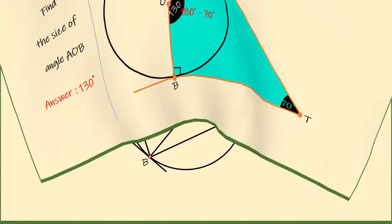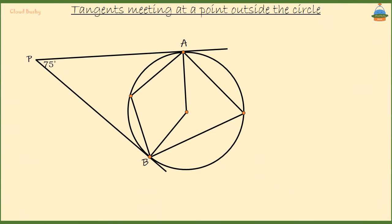Now, let's take this further. We have here a circle with two tangents AP and BP meeting at point P. Angle APB is given as 75 degrees. Two more points are marked on the circle, point Q and point M.